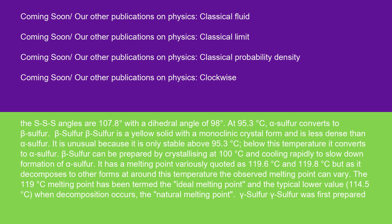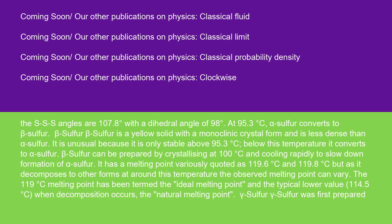Gamma-sulfur was first prepared by F. W. Muthmann in 1890. It is sometimes called nacreous sulfur or mother-of-pearl sulfur because of its appearance. It crystallizes in pale yellow monoclinic needles and is the densest form of the three. It can be prepared by slowly cooling molten sulfur that has been heated above 150°C, or by chilling solutions of sulfur in carbon disulfide, ethyl alcohol, or hydrocarbons.